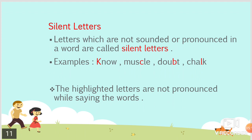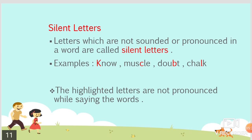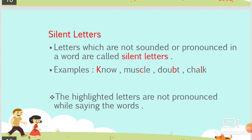Silent letters are letters which are not sounded or pronounced in a word. For example, K-N-O-W is pronounced 'know'; M-U-S-C-L-E is pronounced 'muscle'; D-O-U-B-T is pronounced 'doubt'; and chalk — the highlighted letters are not pronounced while saying these words, so they are called silent letters.